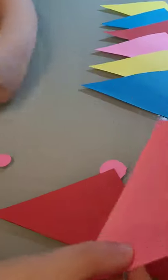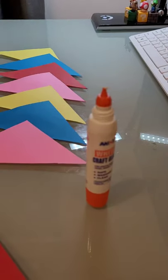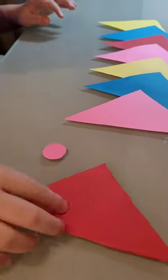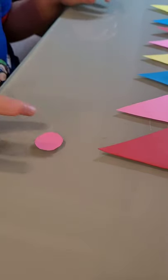The next step is gluing three of these triangles to this big circle. Let me take one and add glue.